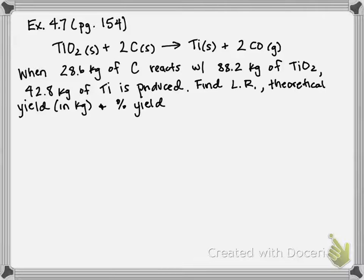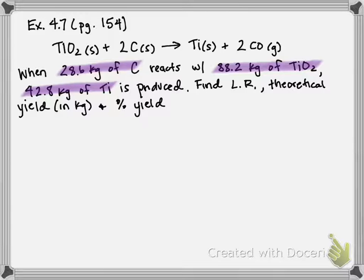This problem states that when 28.6 kilograms of carbon reacts with 88.2 kilograms of titanium oxide, the reaction produces 42.8 kilograms of titanium. We need to find the limiting reactant, the theoretical yield, and the percent yield. The first two numbers — 28.6 kg of carbon and 88.2 kg of titanium oxide — are the reactant amounts we'll use to determine the limiting reactant and theoretical yield.